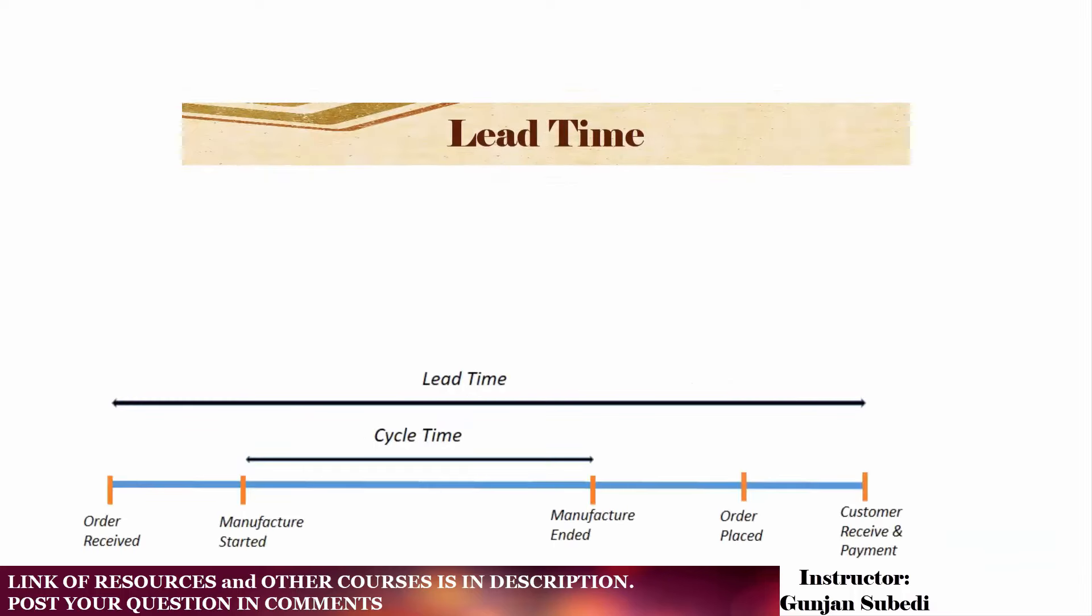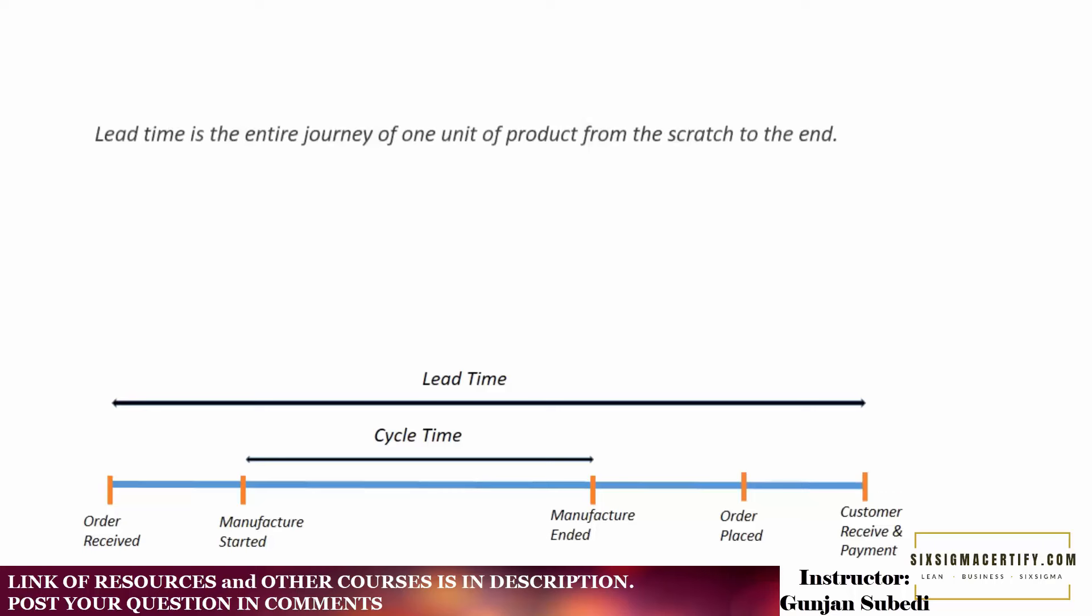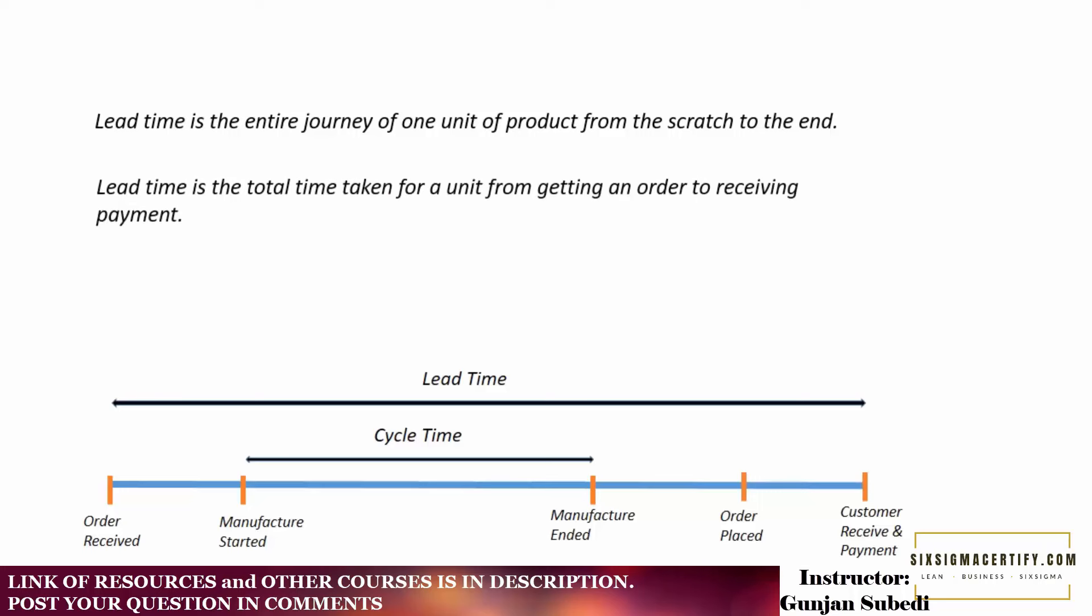In this lecture, we are going to study about the lead time. So we already learned about the takt time and cycle time in the earlier lectures. You can know the relationship between the cycle time and lead time from this diagram alone. We studied that the cycle time is the time of manufacture of single unit from the start of the manufacturing process to the end of the manufacture. But the lead time, it's given here that it's a bit longer. It starts right from the receiving of the order to where customers receive the goods or services and you receive the payment. So lead time also incorporates the cycle time as we can easily see from this figure alone. Lead time is the entire journey of one unit of product from the scratch to end. Lead time is the total time taken for a unit from getting an order to receiving the payment.